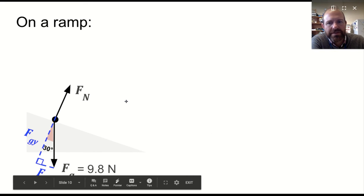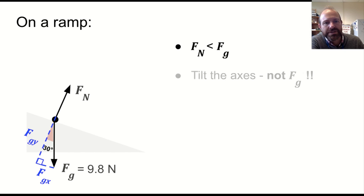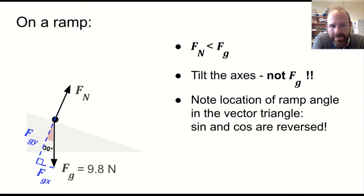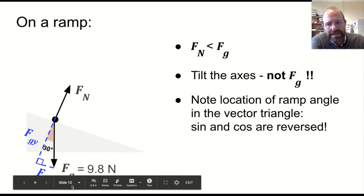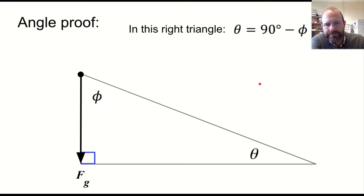So on a ramp, there's a couple of interesting things that we can think about. The normal force is going to be less than the force of gravity because it's equal to just a component. We tilt the axes. We don't move the force of gravity, and this is important. You might argue, what's the difference between just tilting my problem so the ramp is horizontal? Well, in this case, the force of gravity is a physical force, so its direction has meaning in the physical world, not just in a theoretical sense. So we want to tilt the axis. The location of the ramp angle in the vector triangle, notice the ramp angle is 30 degrees, is down at the tip of the angle, and that angle corresponds to this angle in our vector diagram. So the sine and the cosine are reversed from what we normally see.